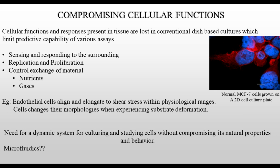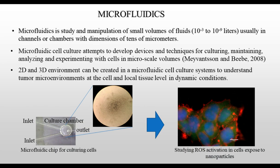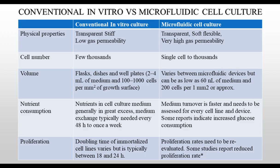How can we study cell dynamic systems? One answer is microfluidics. Microfluidics is the study and manipulation of small volumes of fluids in channels and chambers with dimensions of tens of micrometers. Microfluidic cell culture attempts to develop devices and techniques for culturing, maintaining, analyzing, and experimenting with cells at micro-scale volumes. Using this microfluidic technique, we can make devices to carry out 2D and 3D cell culture systems. The following image shows a microfluidic chip comprising inlets for media, a culture chamber in which cells can be grown, and an outlet for removal of spent media.